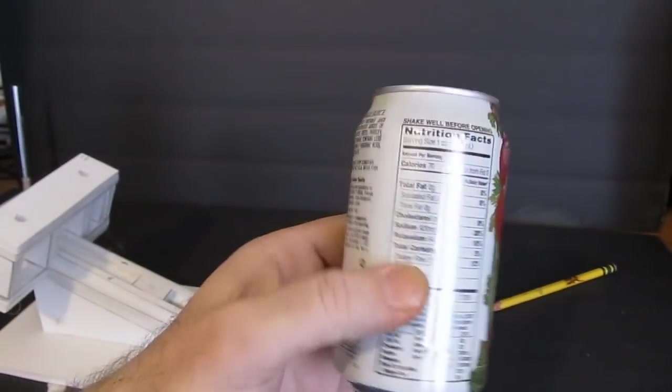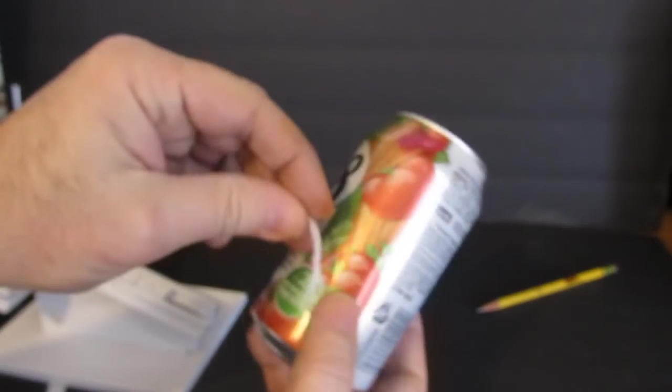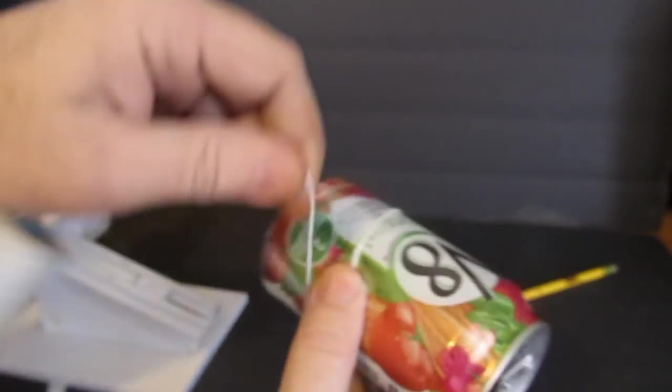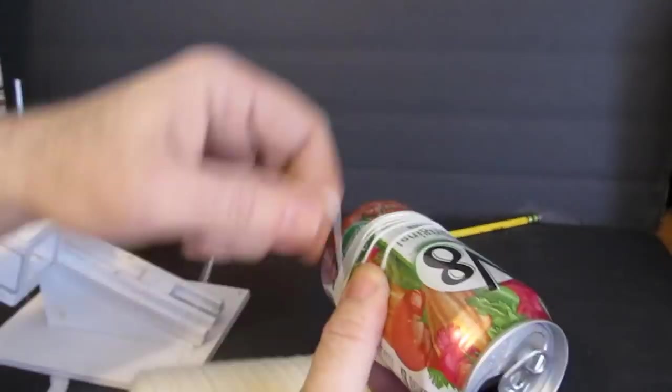Now we're going to wrap the skeins to make the torsion springs. Get yourself a can, wrap ten wraps of string around it to form a hoop. You can use a bottle, anything round—it doesn't have to be a can.